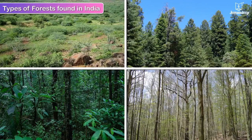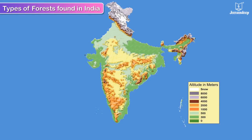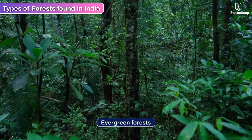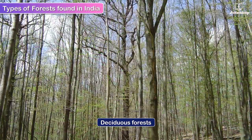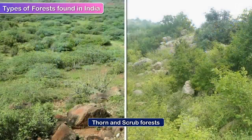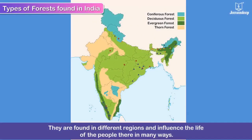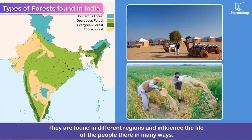Types of forests found in India: India is a large and geographically diverse country. Indian forests include evergreen forests, deciduous forests, coniferous forests, and thorn and scrub forests. They are found in different regions and influence the life of the people there in many ways.